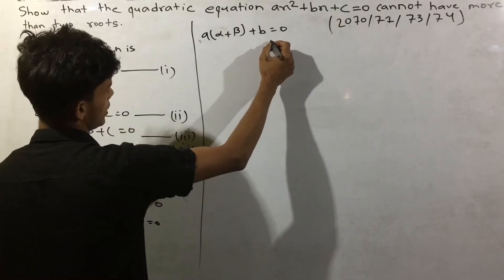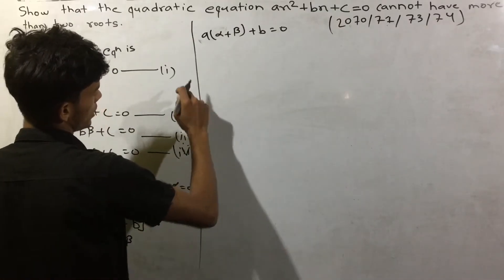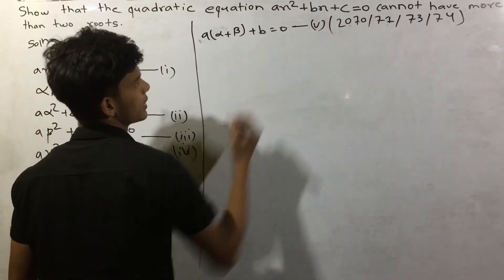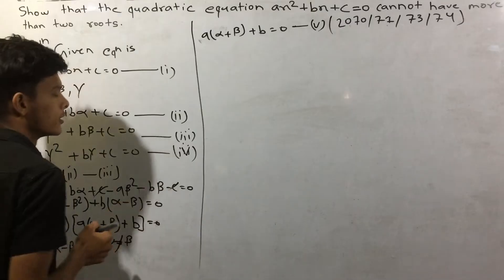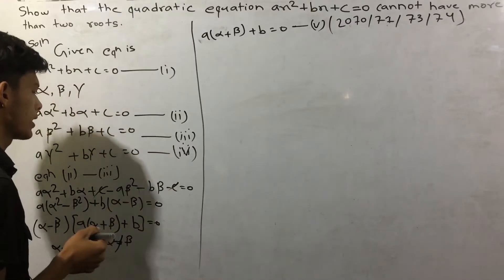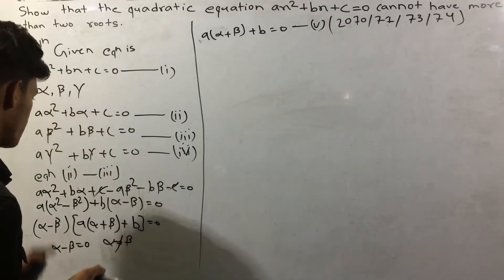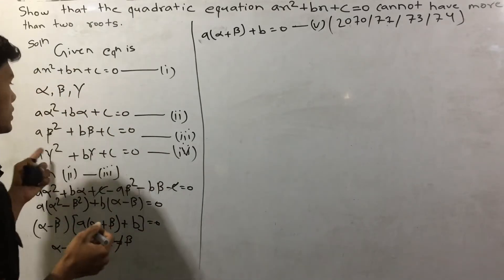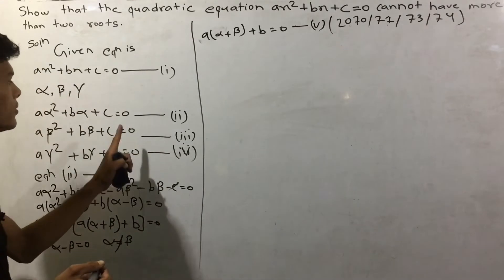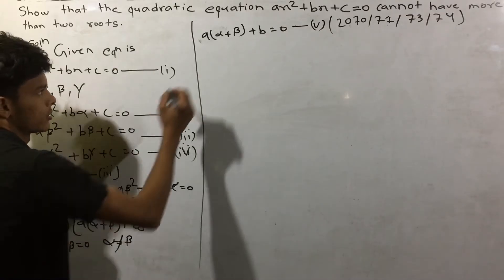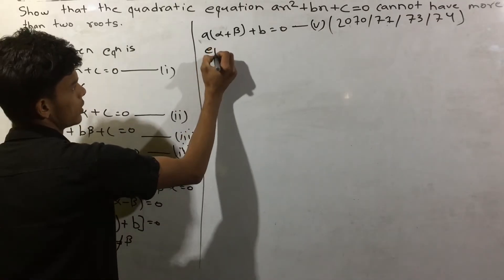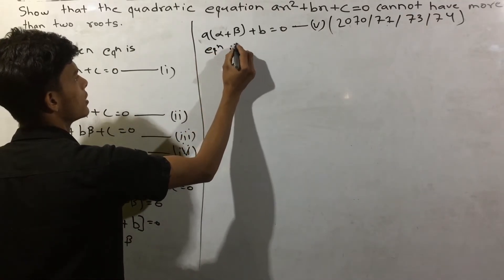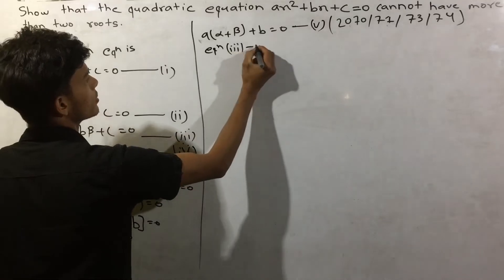I will say 1, 2, 3, 4, and I will say 5. Similarly, we will say that the equation is 1, 2, 3, 4, and we will say that the equation is 1, 2, 3, 4.